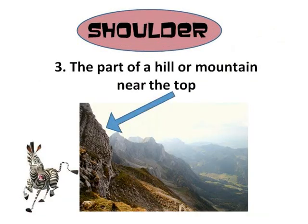Did I hear somebody say shoulder of a mountain? You are right. Can you point to where you think the shoulder of the mountain is? If you say it is there where the arrow is pointing — that part that is not sloping — you got it right.